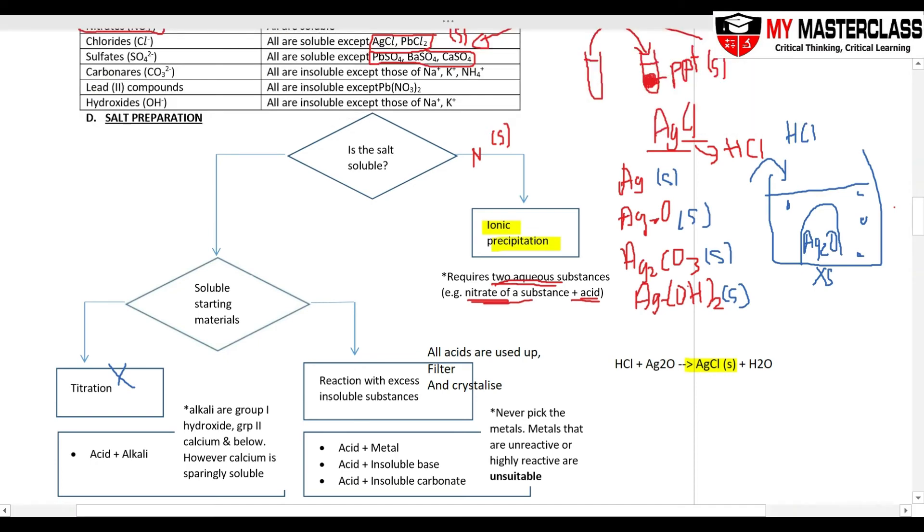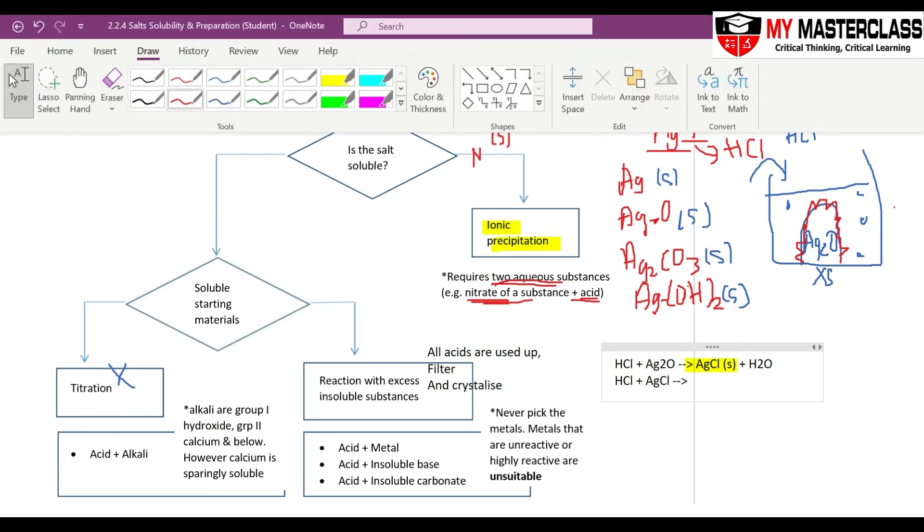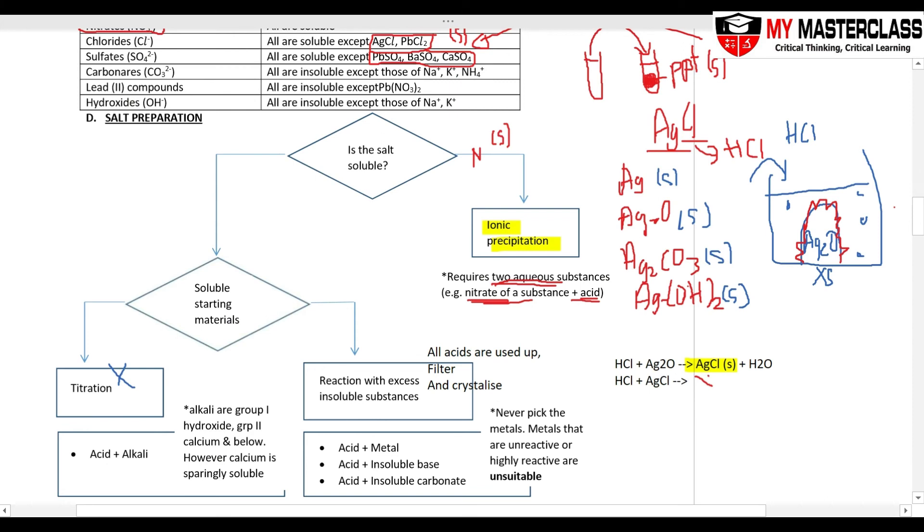It will form a layer around your silver oxide. So if I continue to pour in more acid, it is not touching the Ag2O anymore—it is touching the AgCl. So when it touches the AgCl, this equation, you swap the partner, there is no reaction. My Ag partner Cl, the H partner Cl—you get the same thing. There's no reaction.